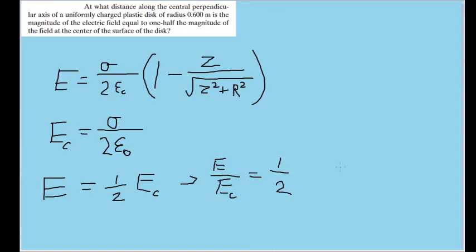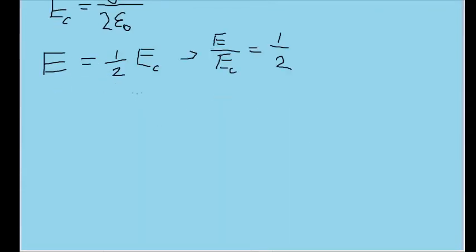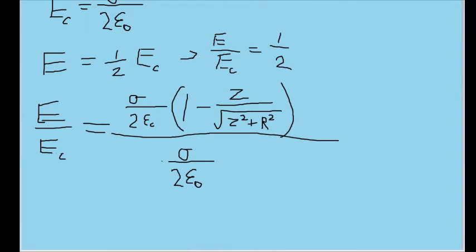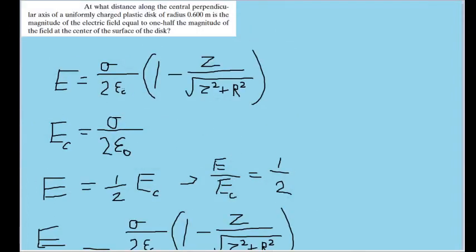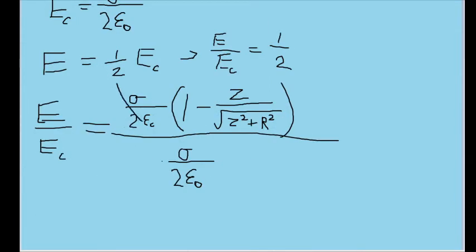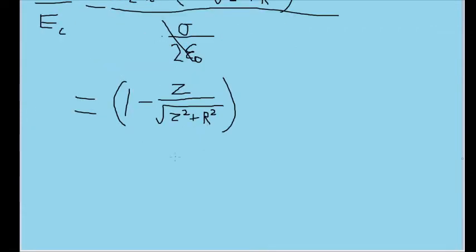Now, let's try writing this ratio with our electric field formulas. I've written it as e divided by e sub c, using the formulas we had before. We can see that the surface charge density divided by 2 epsilon naught just cancels out. And we're left with 1 minus z over the square root of z squared plus r squared.